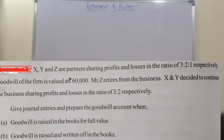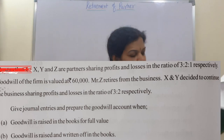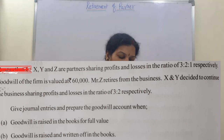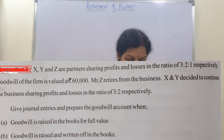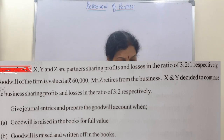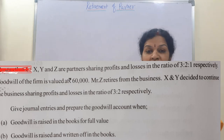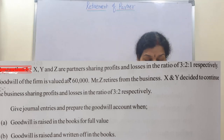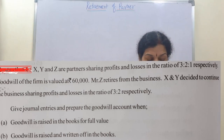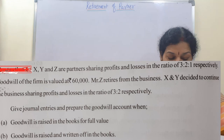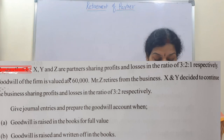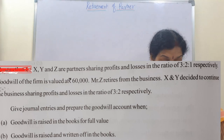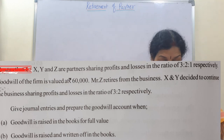The problem is given on the desktop — a small problem I am taking. X, Y, and Z are partners sharing profits and losses in the ratio of 3:2:1 respectively. The goodwill of the firm is valued at 60,000.